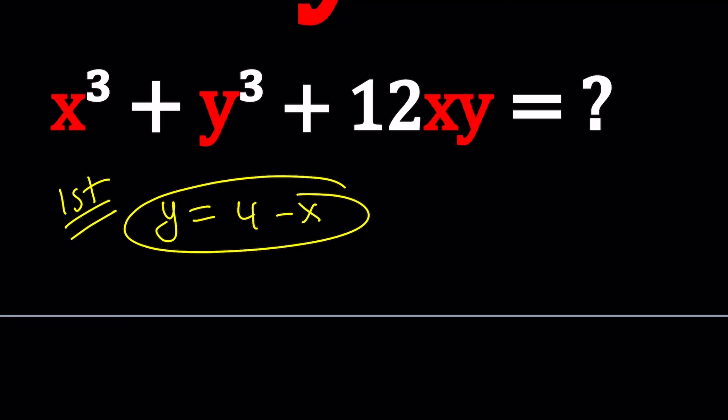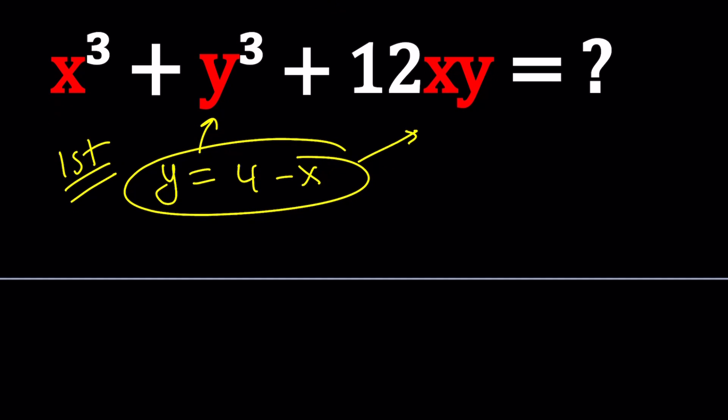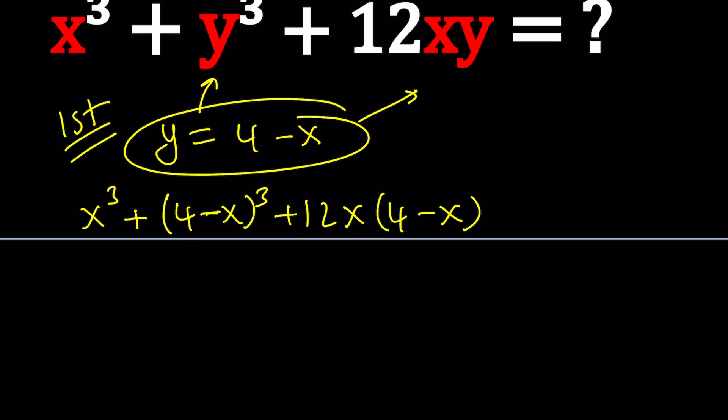I'm going to substitute that into my expression everywhere y occurs. So it's going to be x³ + (4 - x)³ + 12x(4 - x). This looks like a variable expression, but let's simplify it because we're supposed to find a numerical expression at the end. That's what the goal is.